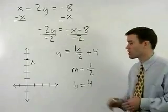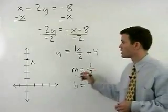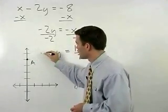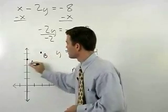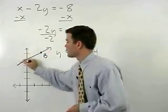From there, we take our slope of 1 half. So we rise 1 and run 2, plot our second point, and graph the line.